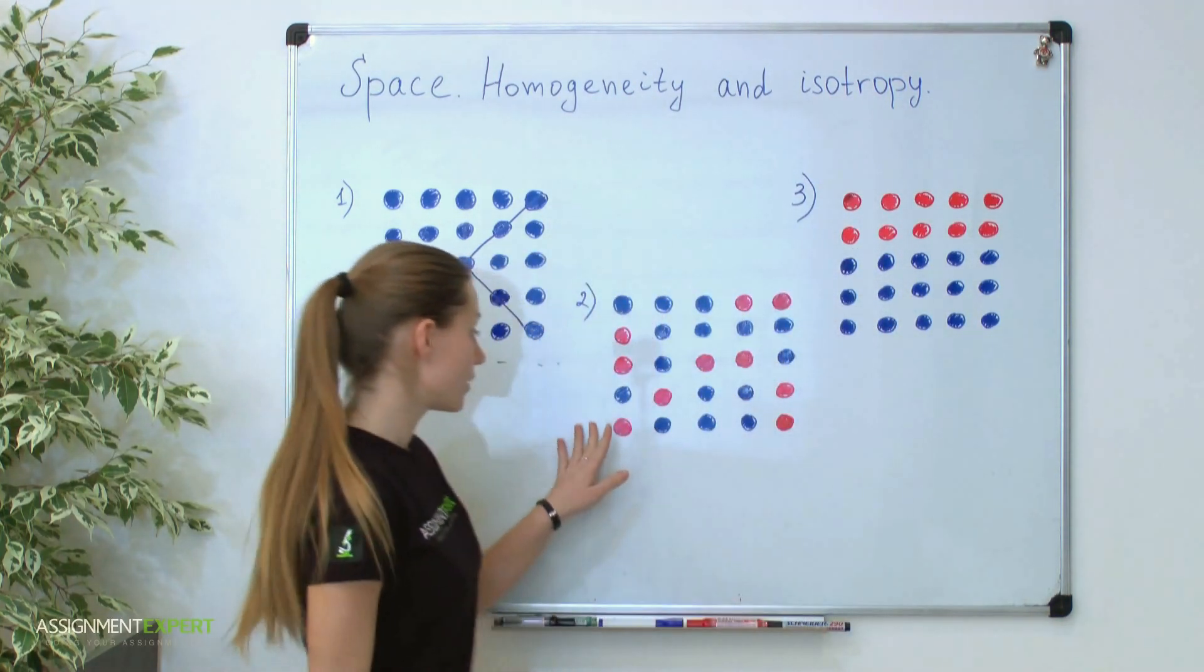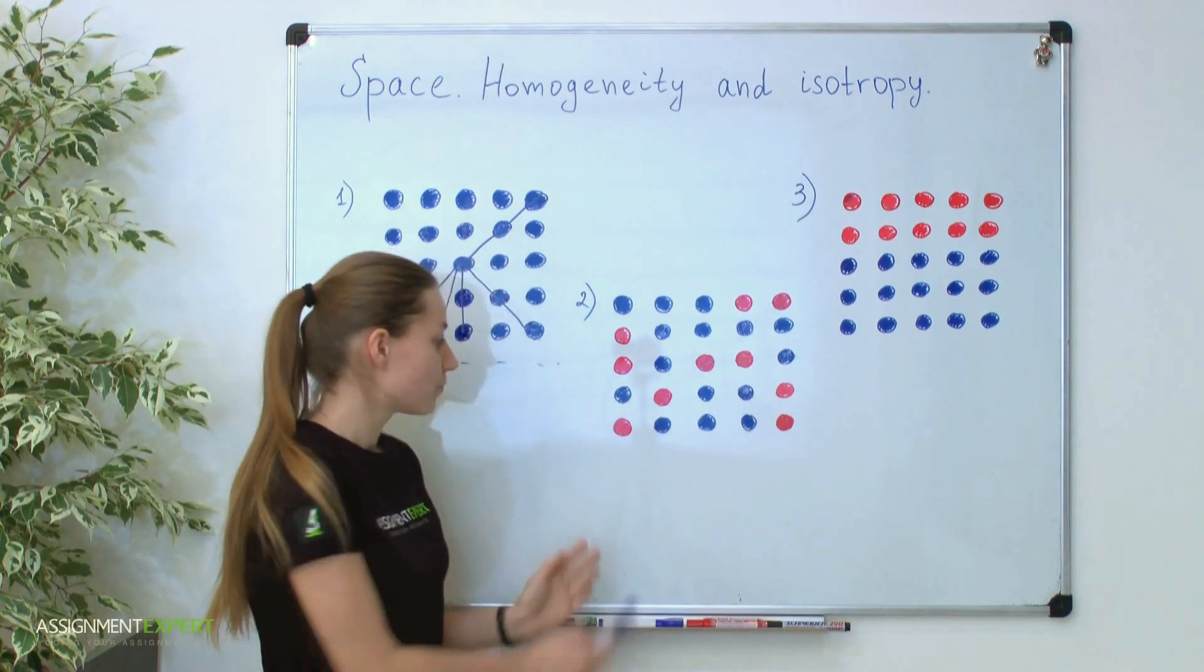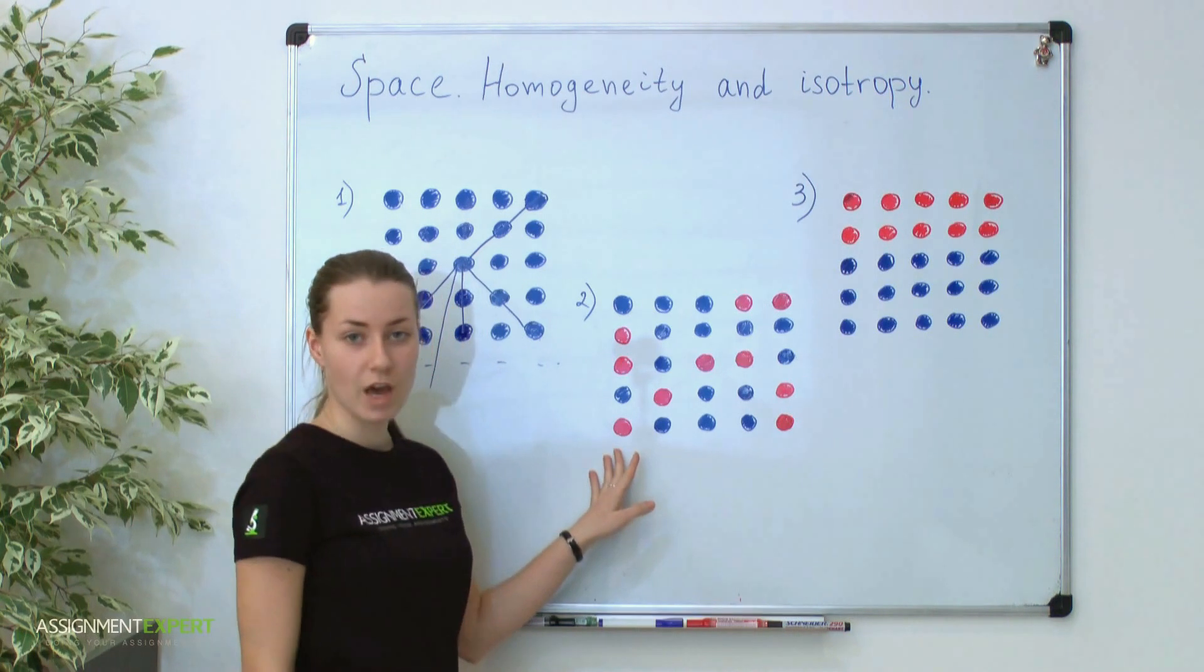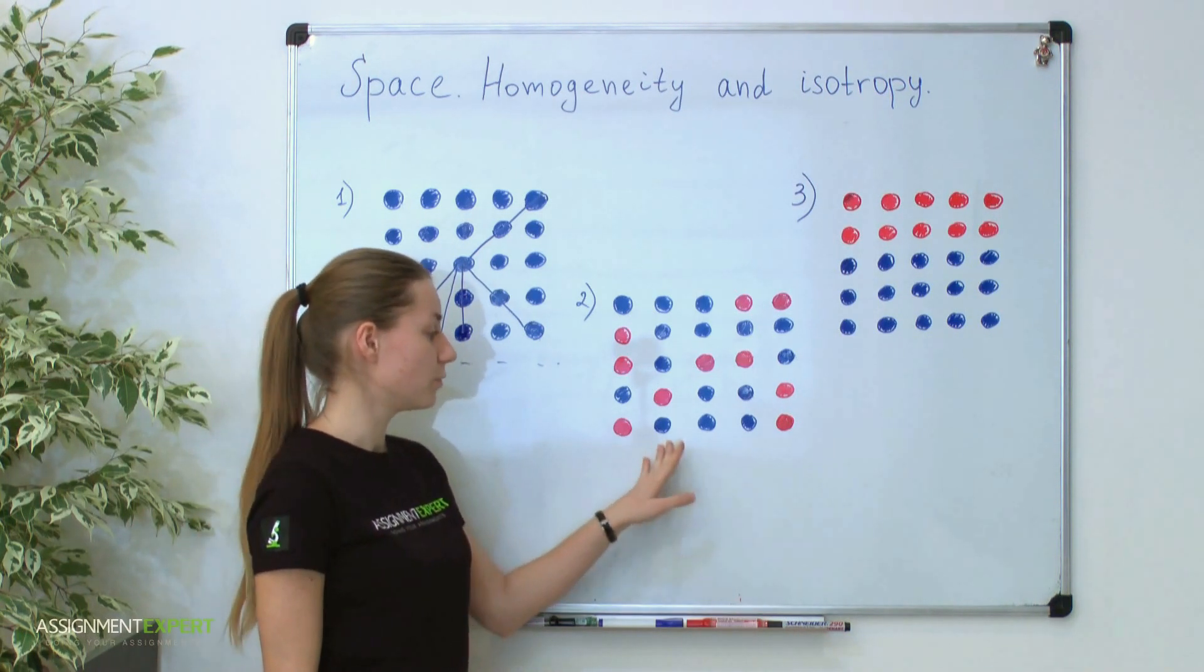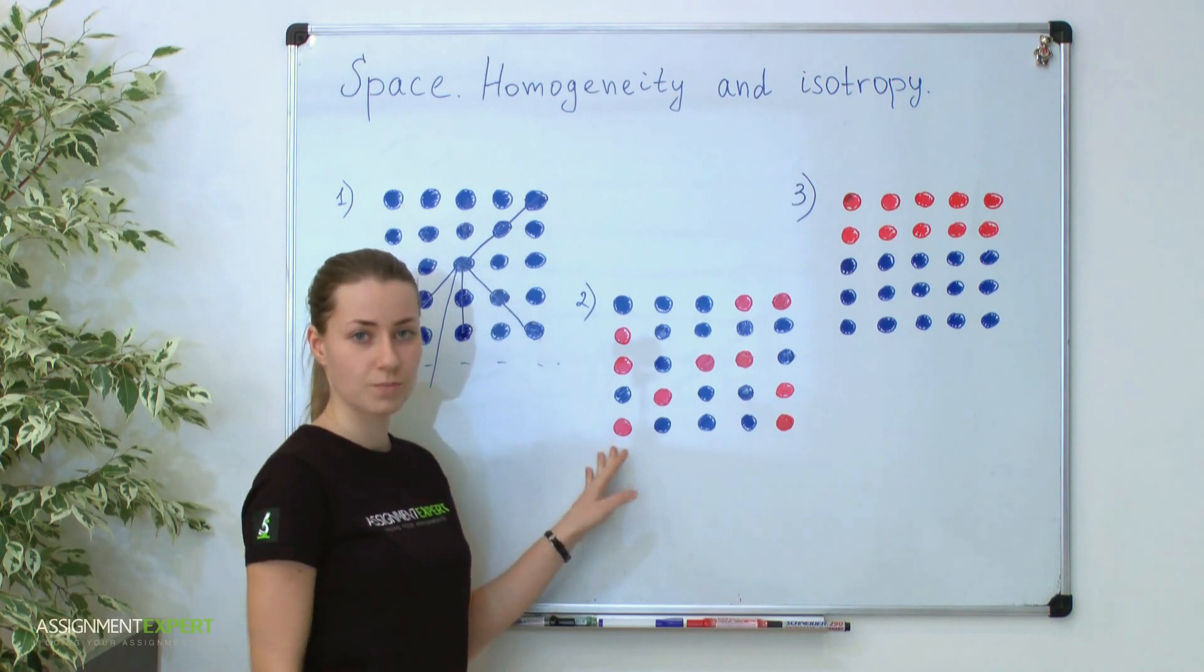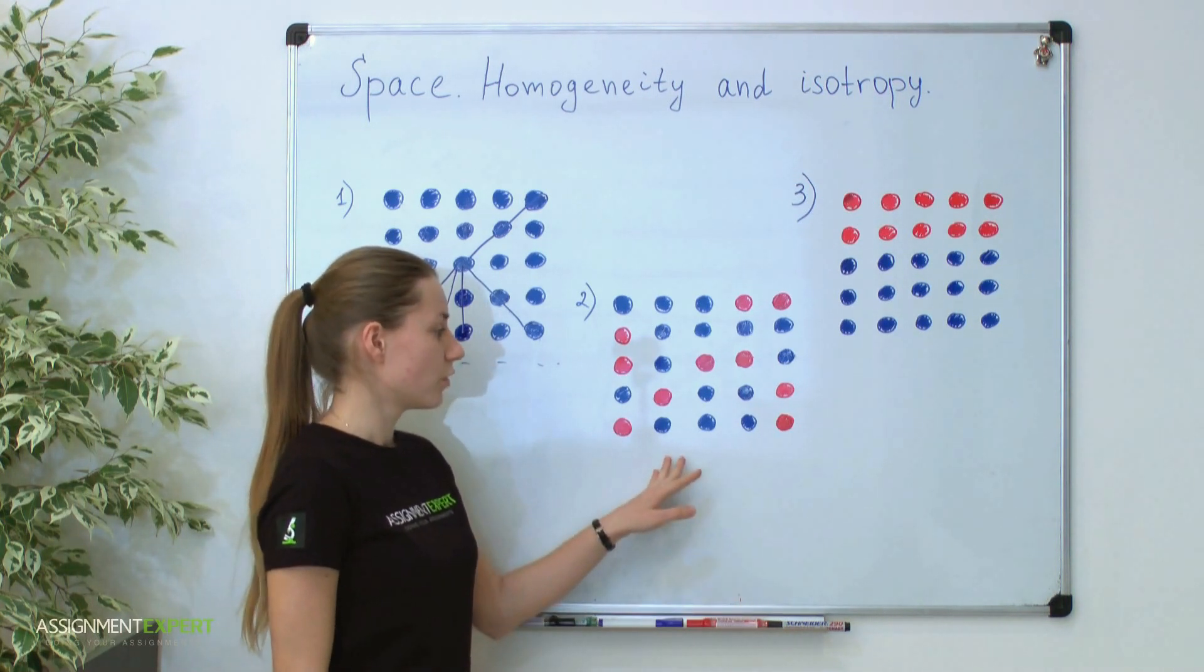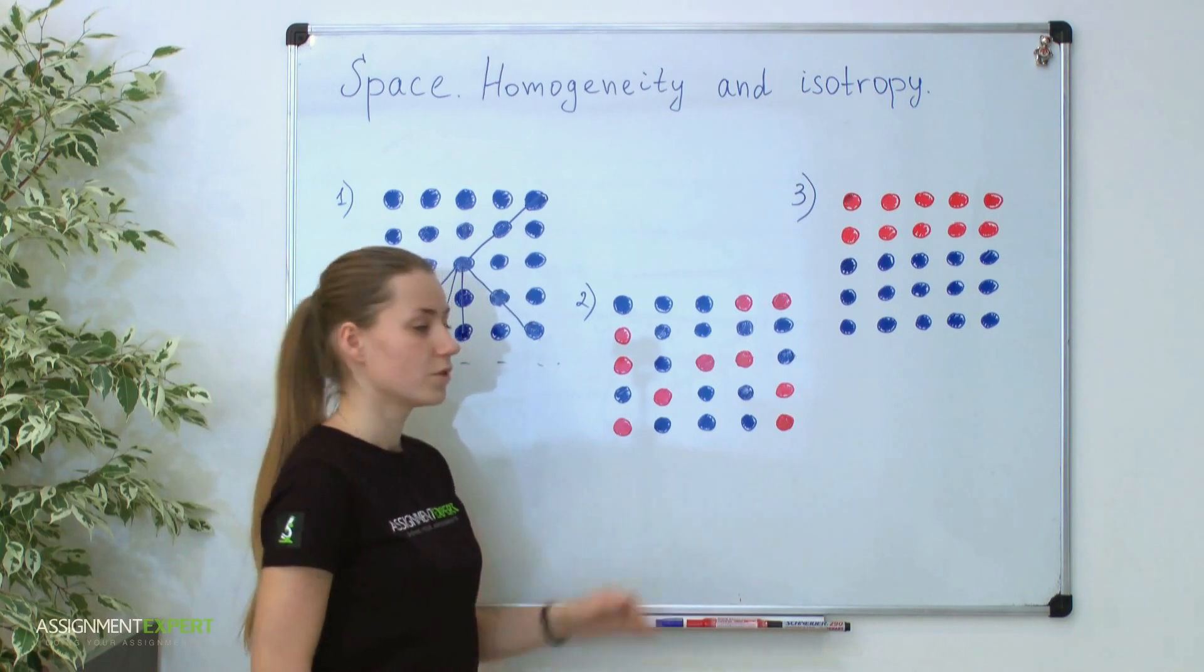But our second crystal is not so easy. You see that here we have two different types of atoms, red and blue ones. It means that our crystal is no more homogeneous. Moreover, it's not isotropic because here we don't have a universality in all directions.